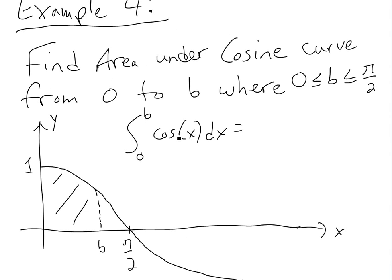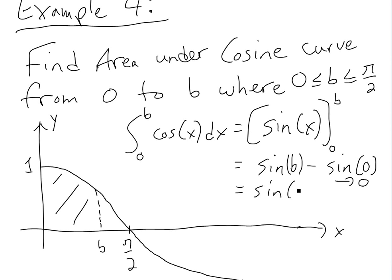This equals the antiderivative of cosine x, which is sine x, because the derivative of sine x is cos x. So this equals sine x from 0 to b, which equals sine b minus sine 0, which is 0.